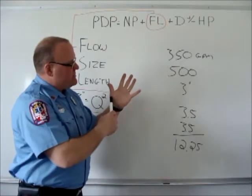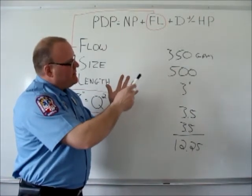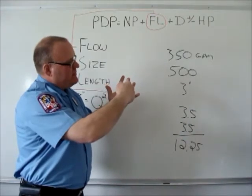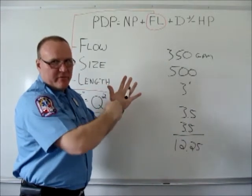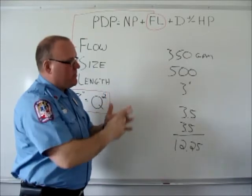So 350 gallons a minute, 1, 2, 3, there's 350, and go 3 times 4 instead of going 3 times 3. So 3 times 4 would give me 12.